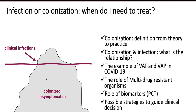Colonization is something which is asymptomatic and doesn't need treatment, while infection is something which has a clinical manifestation and definitely should be treated. But it is always not very easy to find such a demarcating line between the two. In this presentation we would like to define the theory and practice of colonization and infection, the relationship between them, examples, the role of multi-drug resistant organisms, the role of biomarkers, and possible strategies to guide our clinical decision when we find such scenarios.